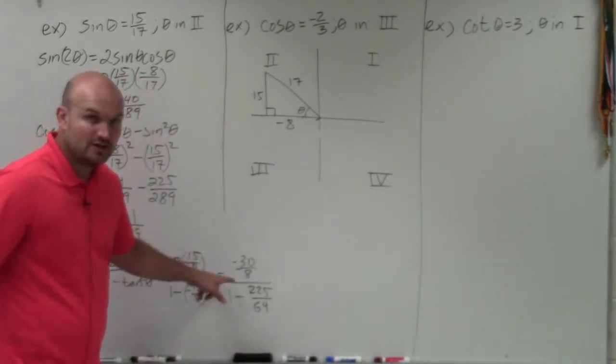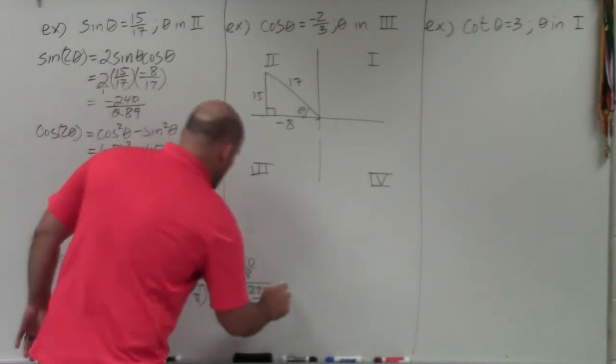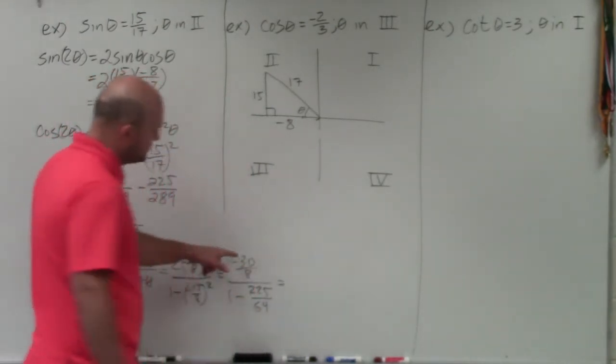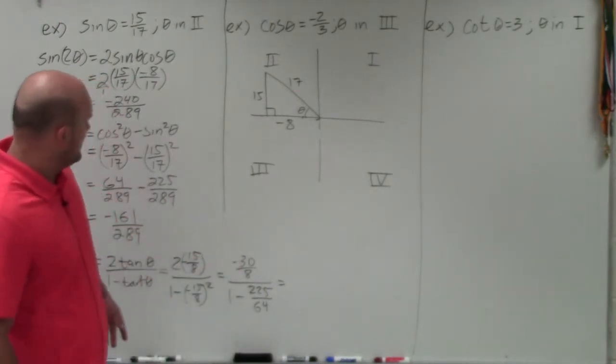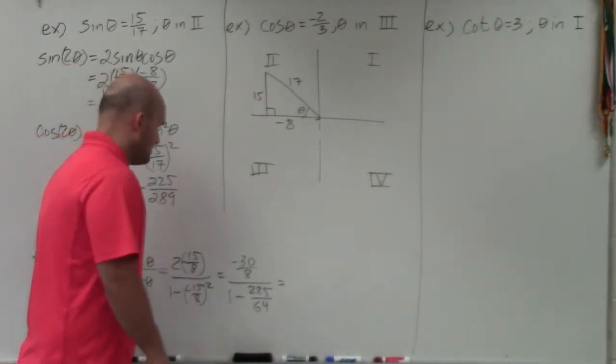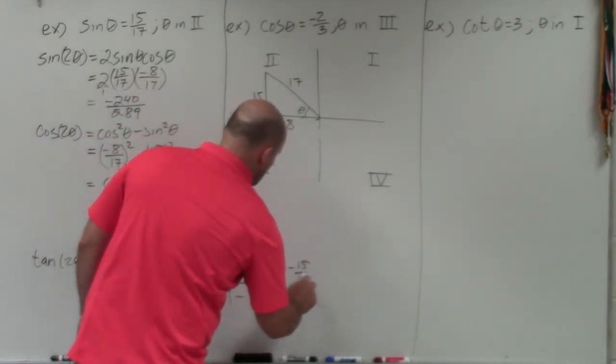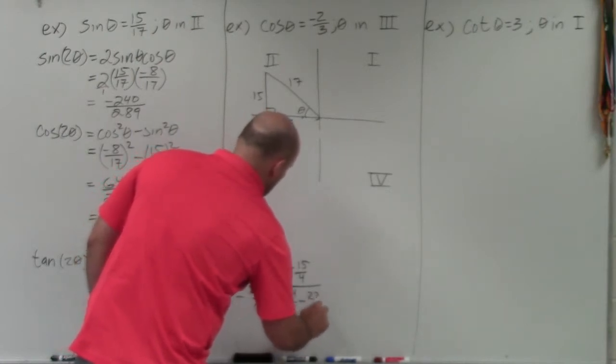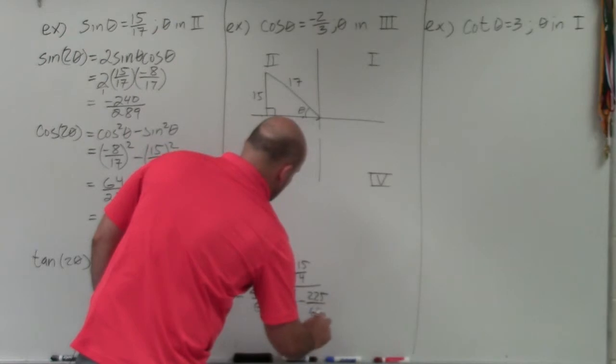Then again, to subtract that, you're going to want to rewrite that as a fraction with a denominator of 64. I can reduce negative 30 over 8. Let's see, I can divide in a 2, so that'd be 15 over 4. So it's going to be negative 15 over 4 divided by 64 over 64 minus 225 over 64.